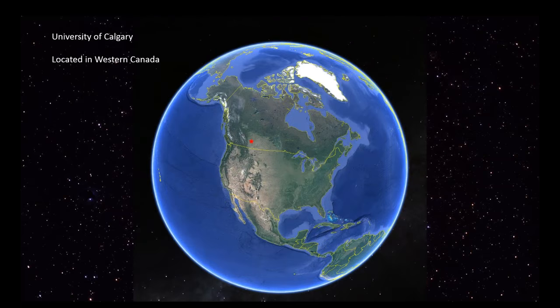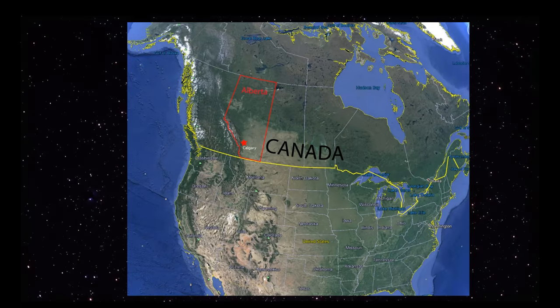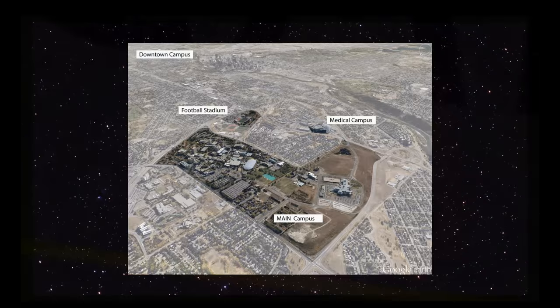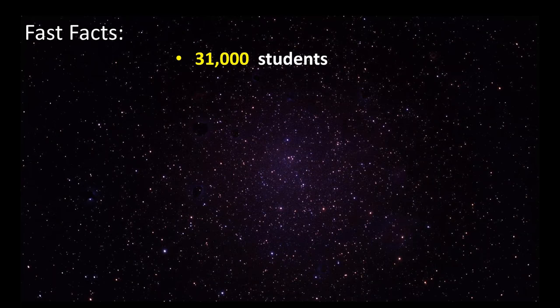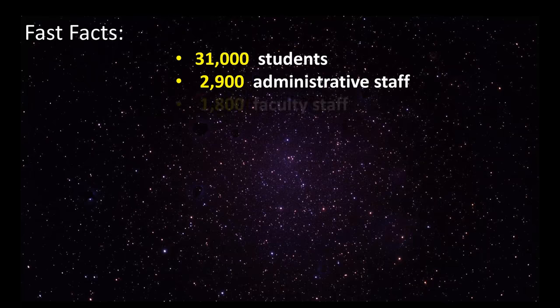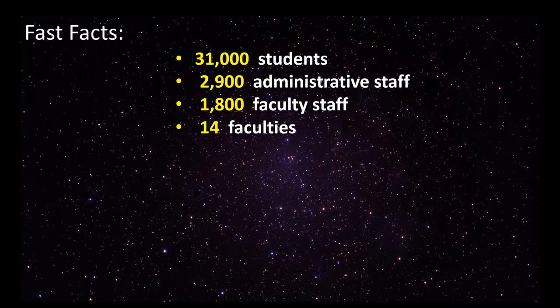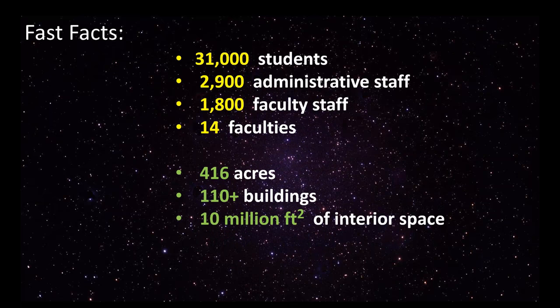The University of Calgary is located in Western Canada in a province called Alberta in a city called Calgary. We have a large campus broken up into different sub-campuses including our medical campus, football stadium, and a campus downtown. The fast facts: there are 31,000 students, 2,900 administrative staff, 1,800 faculty staff, 14 different faculties, and we occupy 416 acres. There are over 110 buildings that we have to deal with in facilities, which occupy 10 million square feet of interior space.